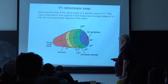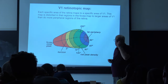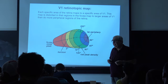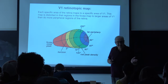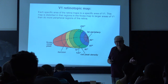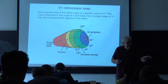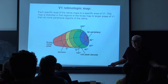The cortex has a pretty odd organization. Not surprisingly, there's much more cortex devoted to the fovea than there is to the periphery.